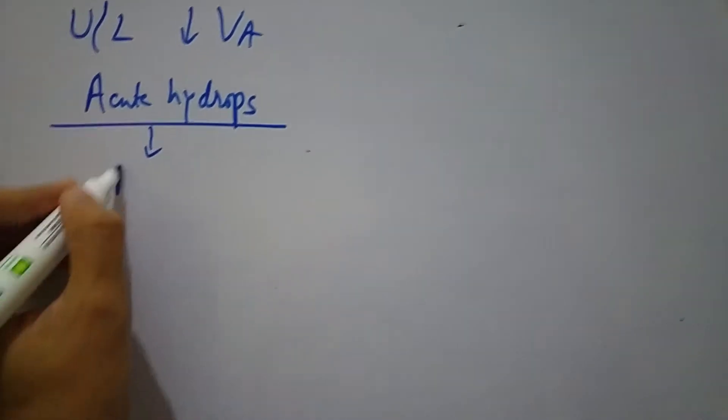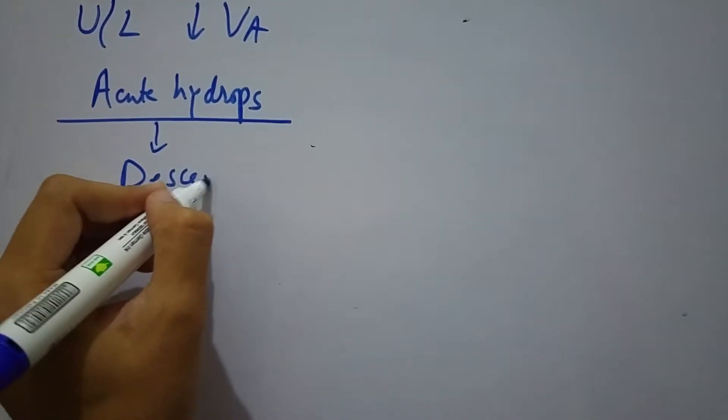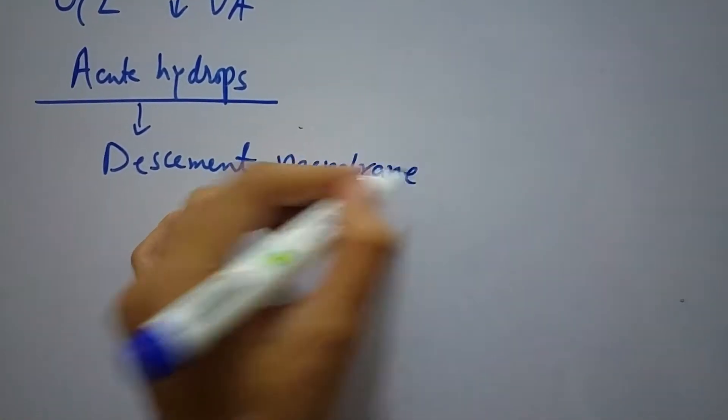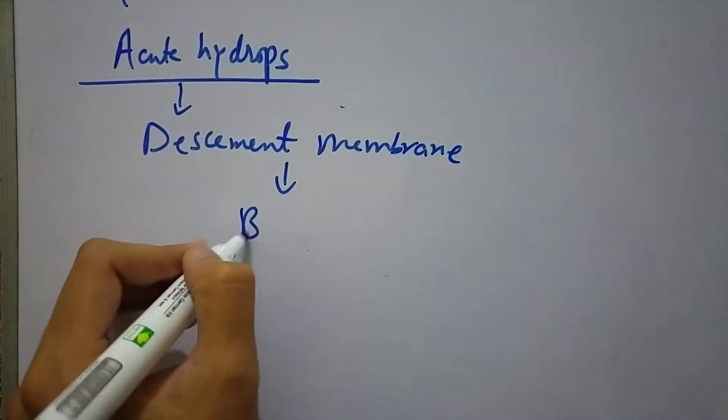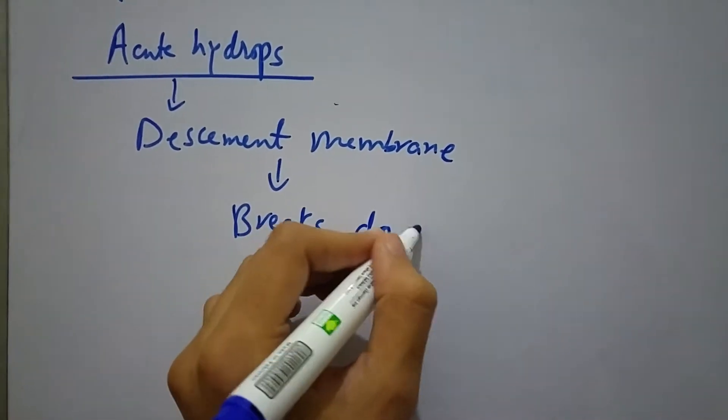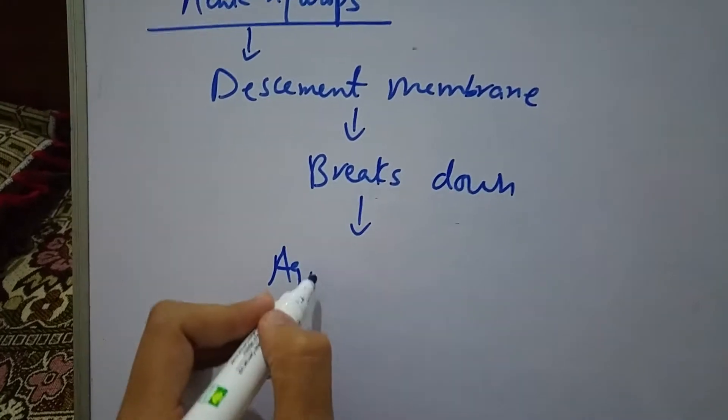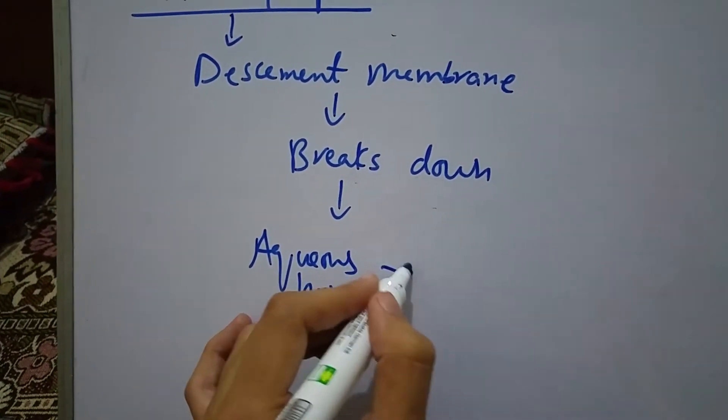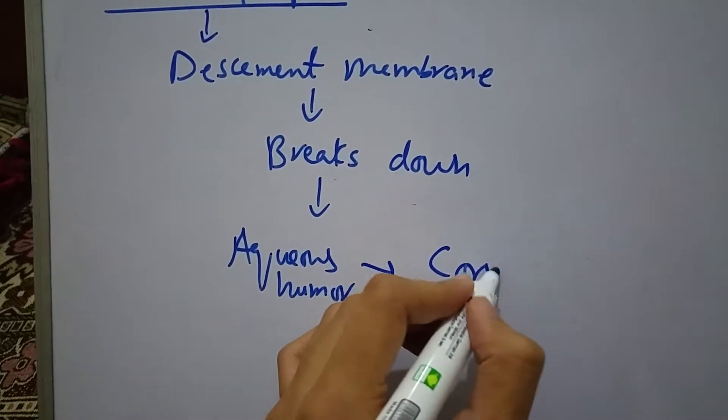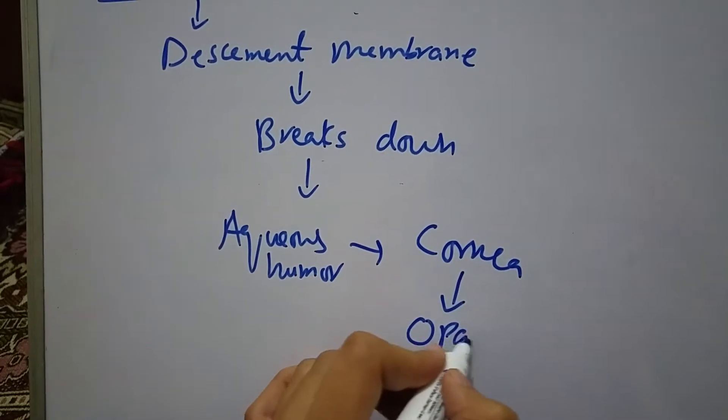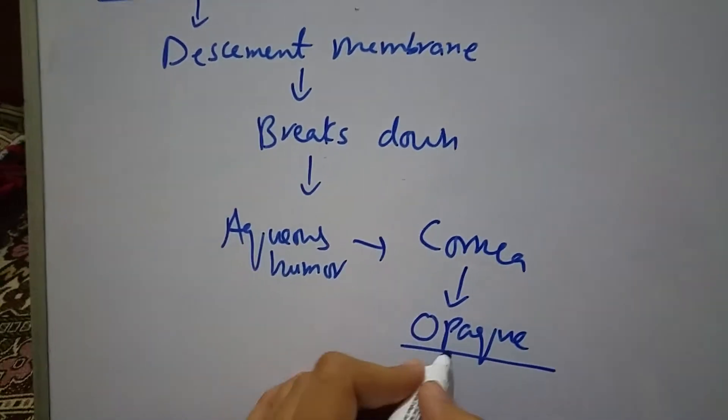In acute hydrops, Descemet's membrane, another layer of the cornea, breaks down. As a result, the aqueous humor enters the cornea and makes the cornea opaque by causing corneal edema.